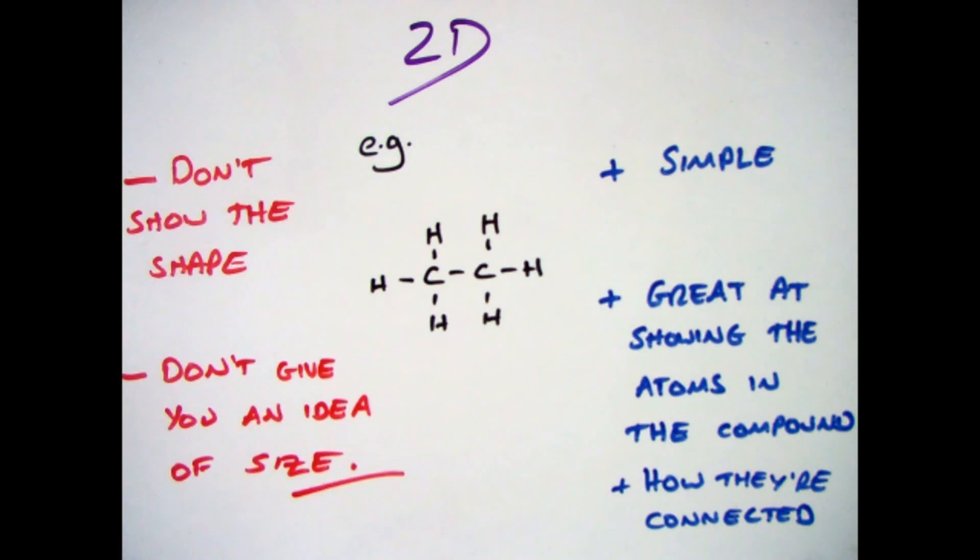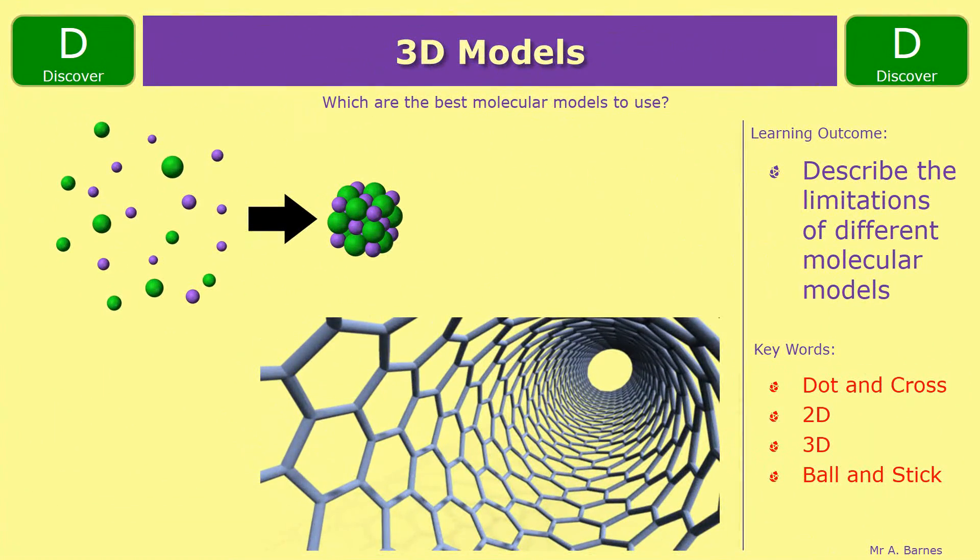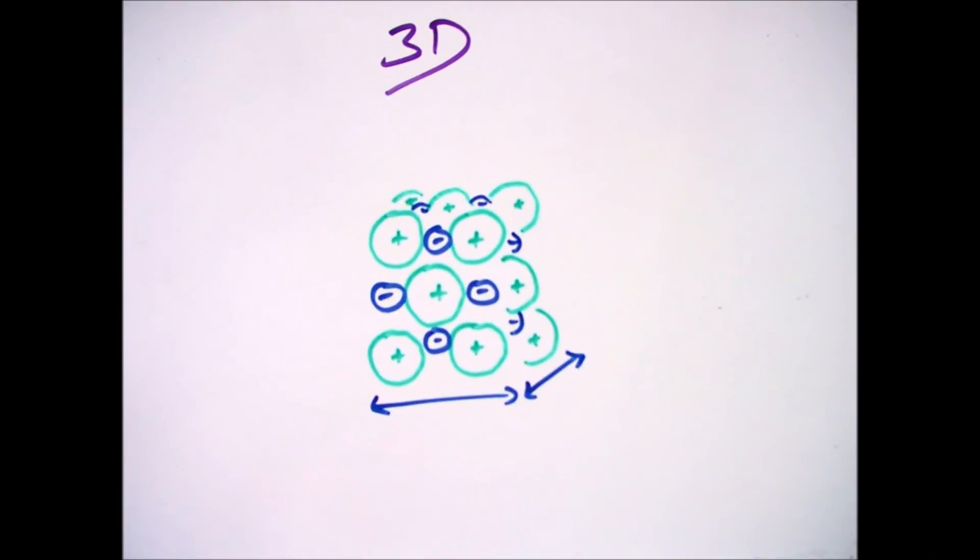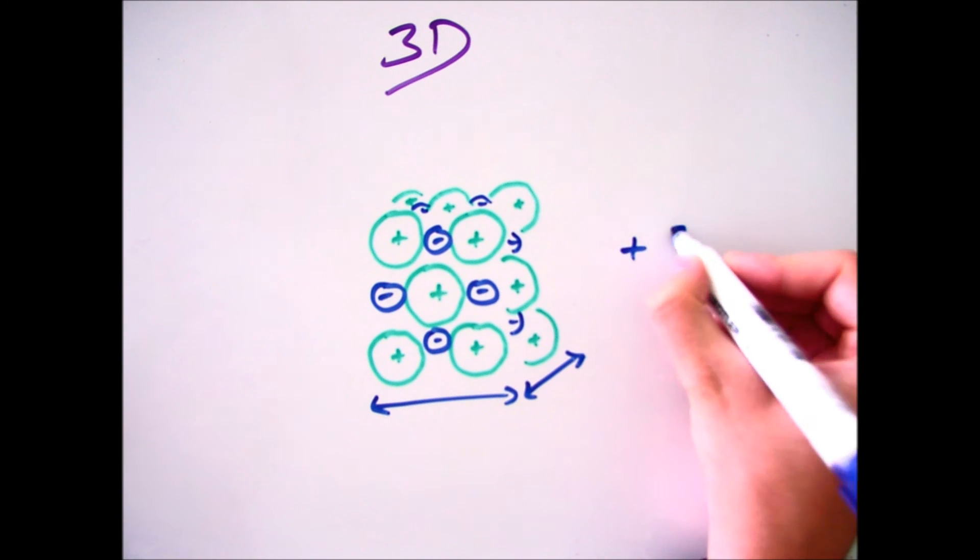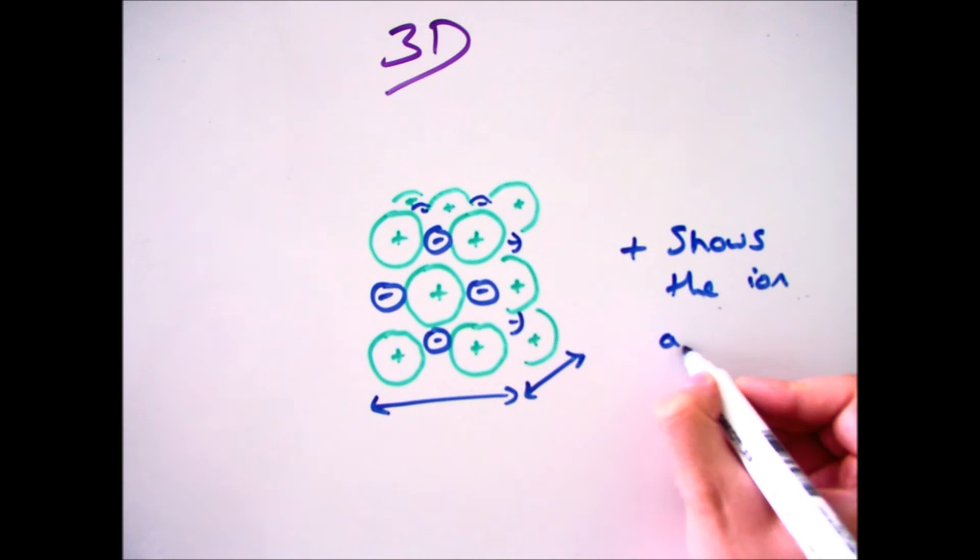Okay, that's it for 2D. Let's move on to 3D then. So here are a couple of examples which you should have seen before. Now these come in really handy when we look at, for example, ionic compounds like sodium chloride, because they show you how the ions are arranged and they show you that ionic lattice structure.